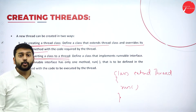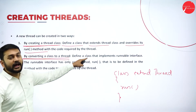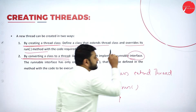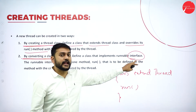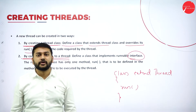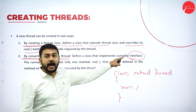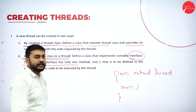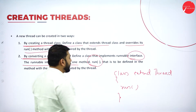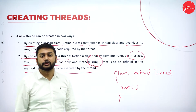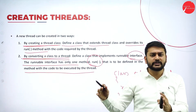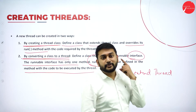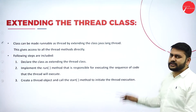The second method is converting a class to a thread. You define a class and implement the Runnable interface. Here, the concept of interface is used, whereas in the first method the concept of inheritance is used. The Runnable interface has only one method — run() — which must be defined with the code to be executed as a thread.